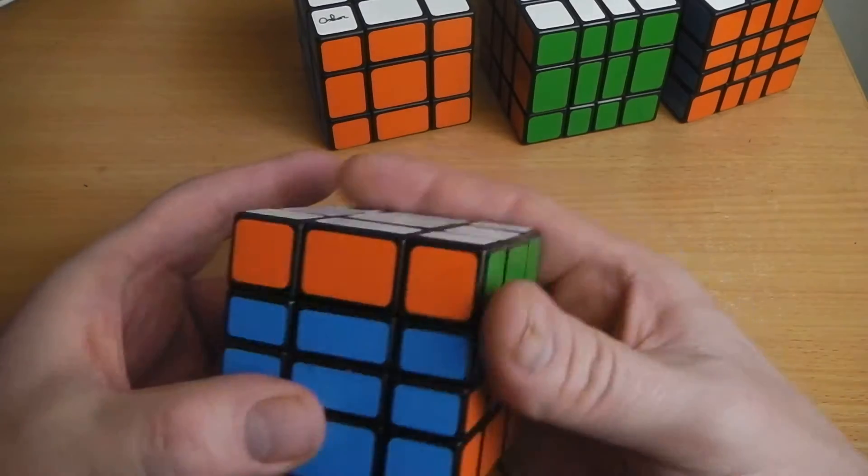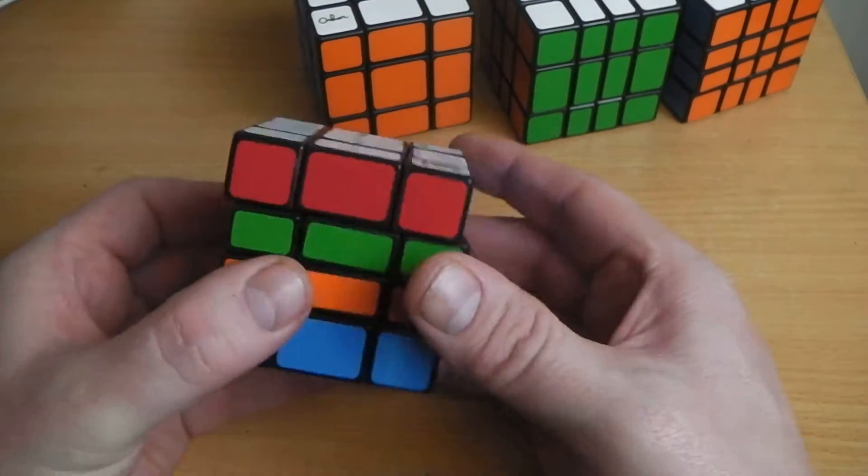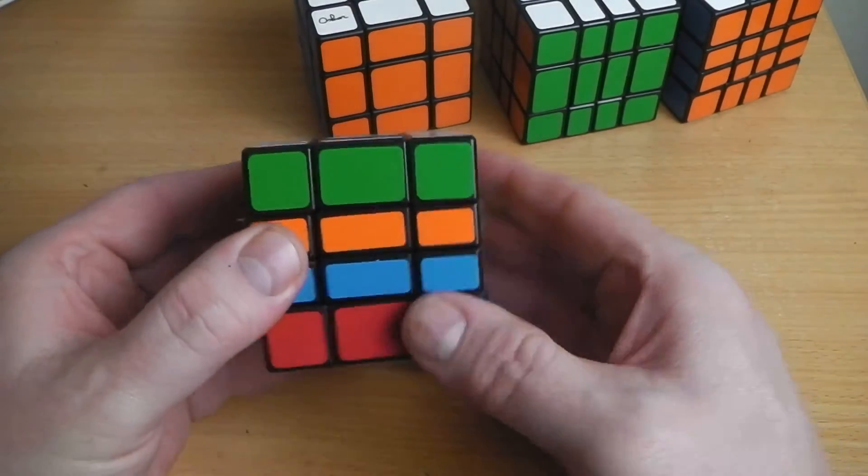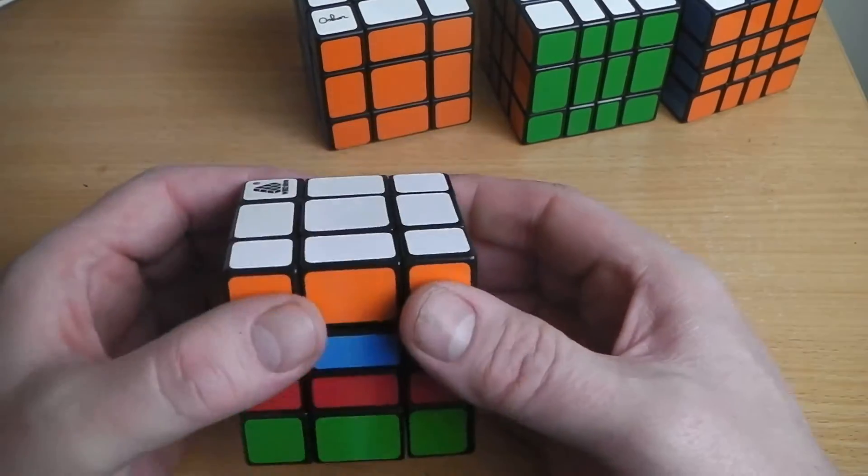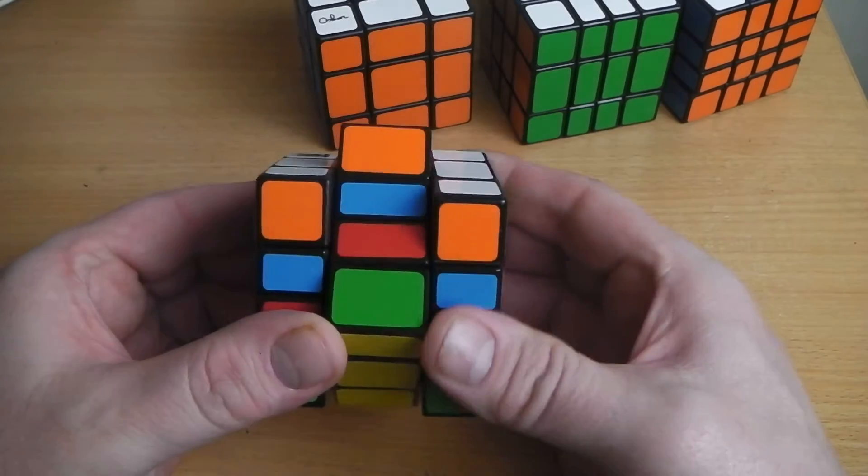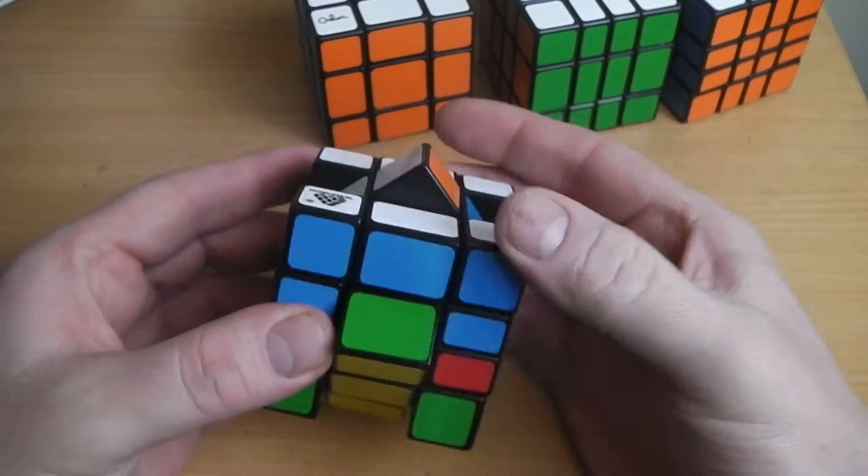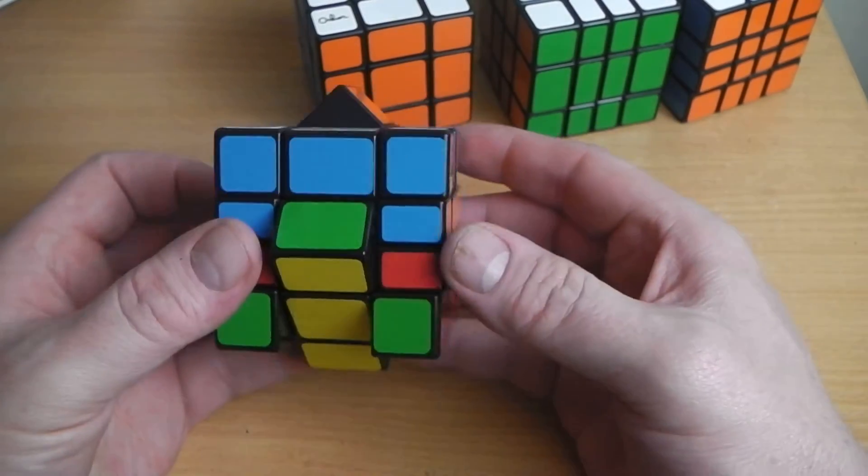The 3x3x4 version works much the same way. Like I said, you can split the center row in half as well and turn separately. But after that it turns much the same way as you can see with the 45-degree turn of the center layer.